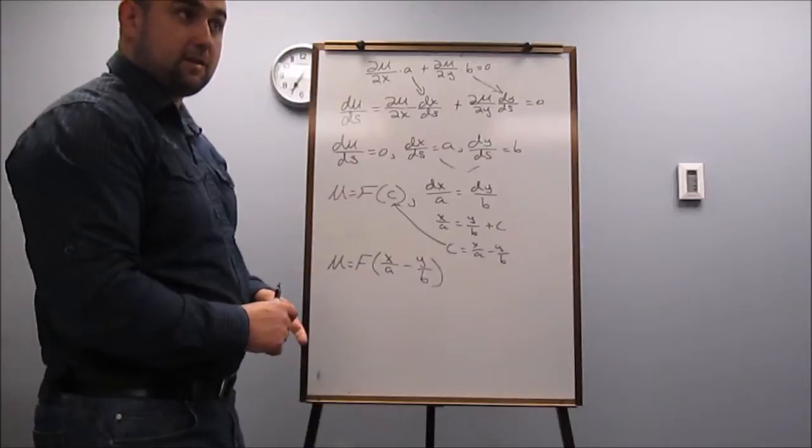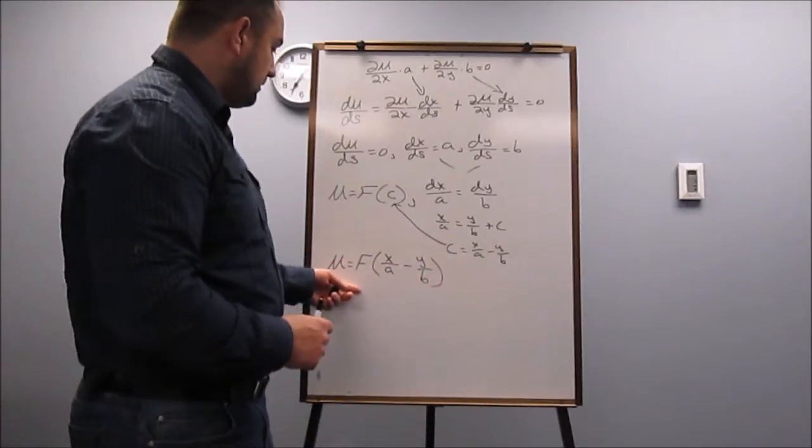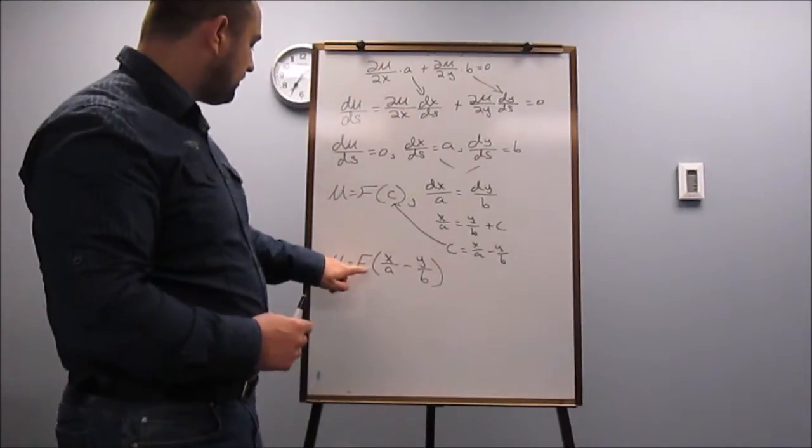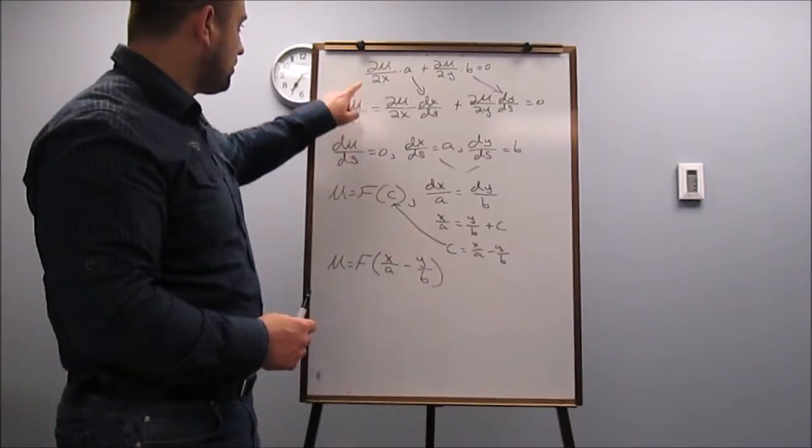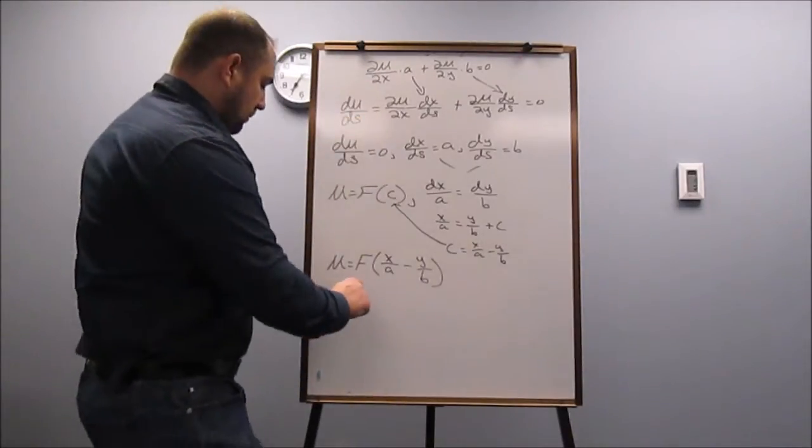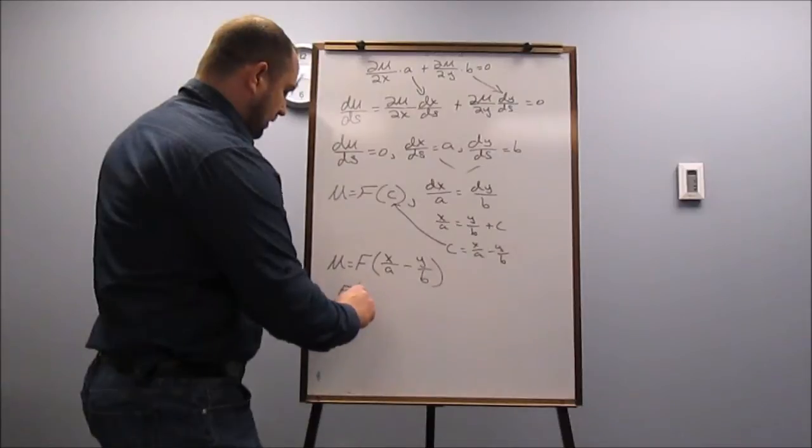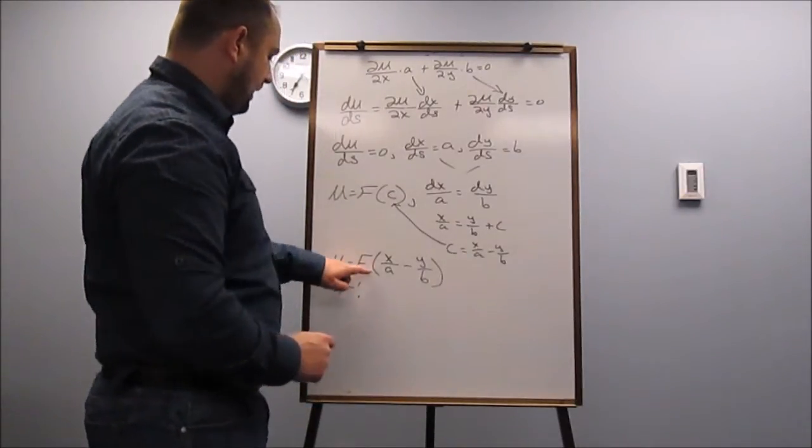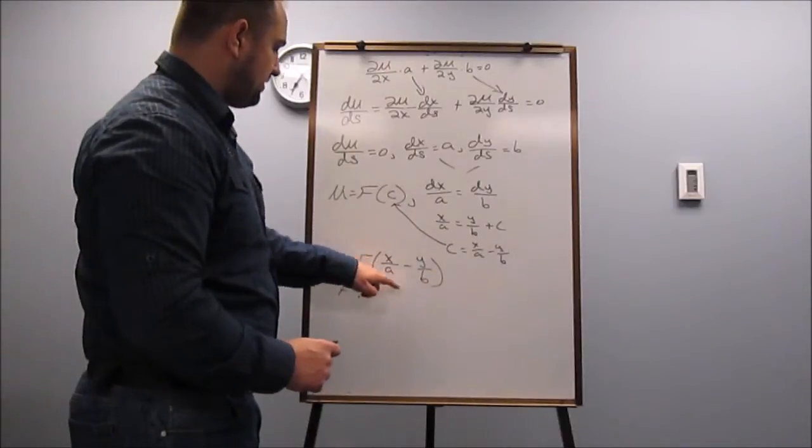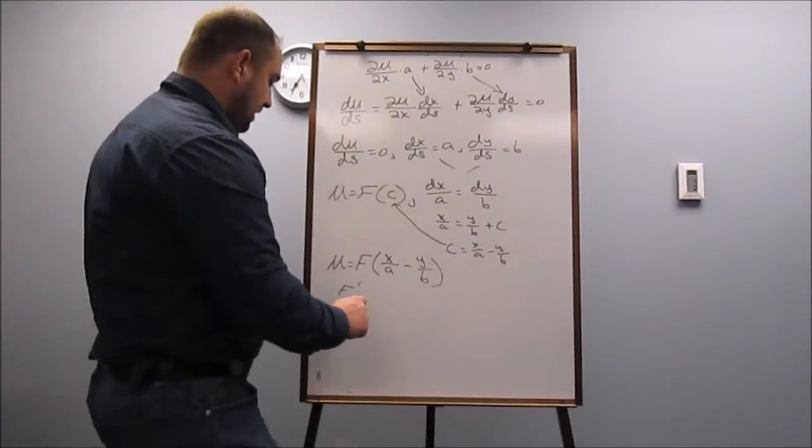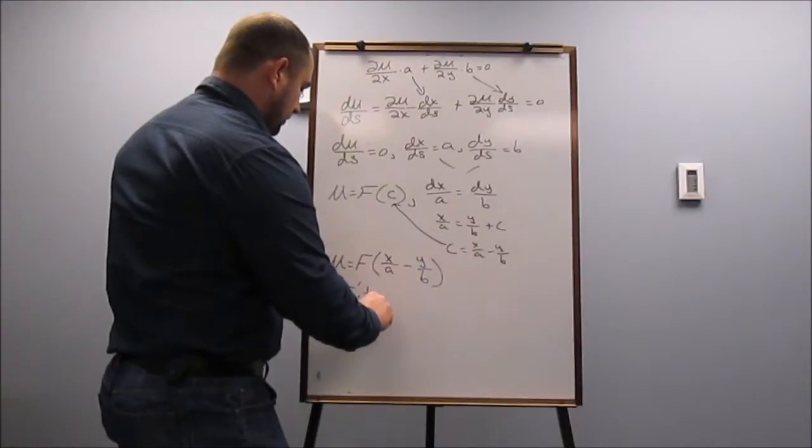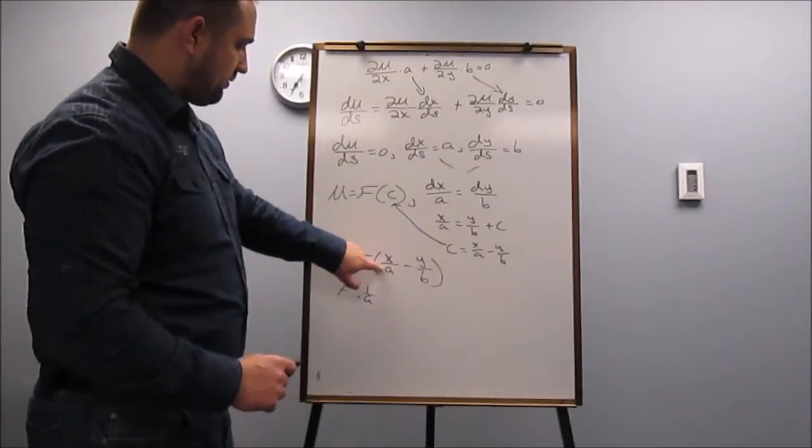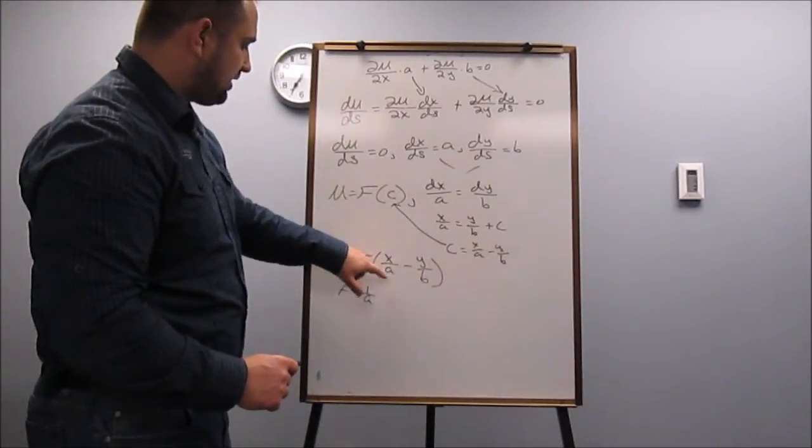Okay, so let's just take a moment and check that that's true. So if I differentiate this function here with respect to X, I'm going to get F prime. Now I have to also differentiate the inside, what's inside. I've got to use the chain rule, so I'm going to get 1 over A from differentiating with respect to X.